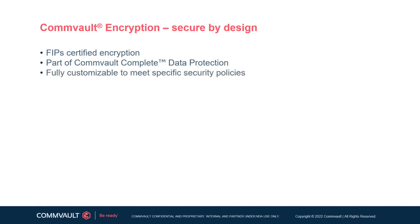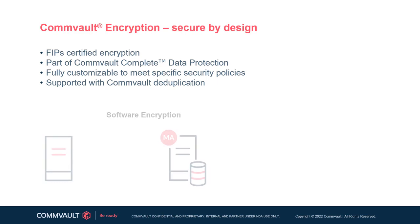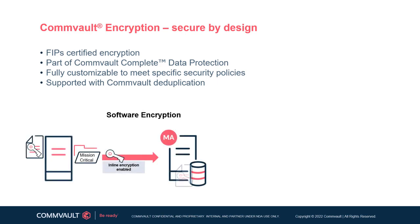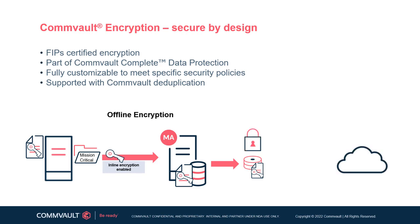Commvault software encryption lets customers choose where and when encryption is implemented, enabling them to meet their own specific security policies. Commvault encryption can even be used together with Commvault deduplication. It provides end-to-end security where data can be selectively encrypted in-line during data protection operations. Software encryption can be initiated on the server being protected or on the media agent and remain encrypted when written to the storage target. Offline or copy-based encryption uses auxiliary copy jobs to secure data.